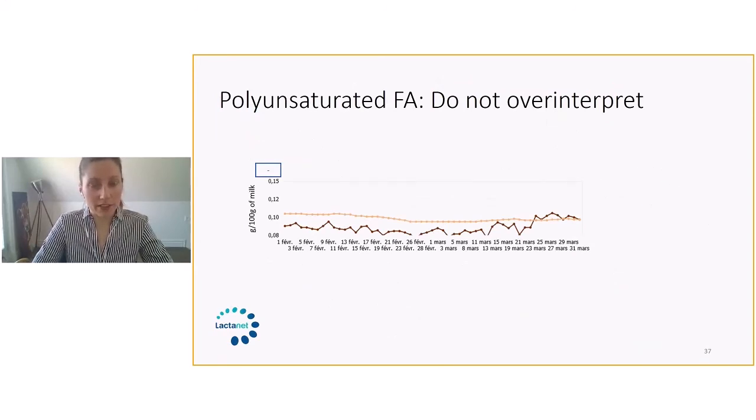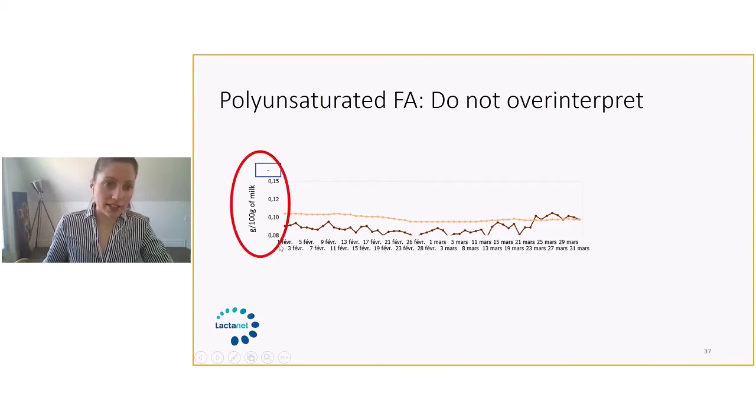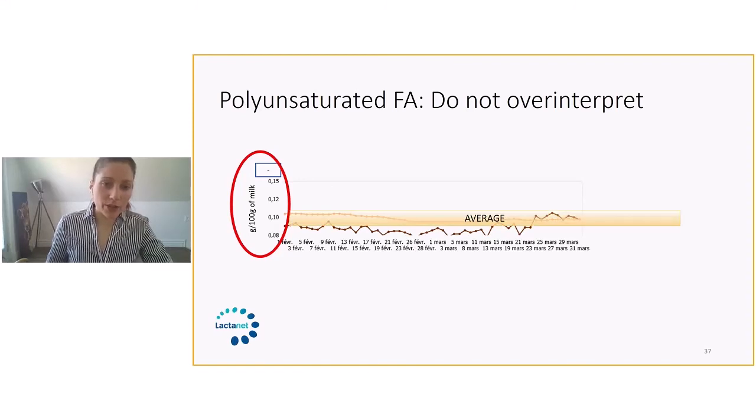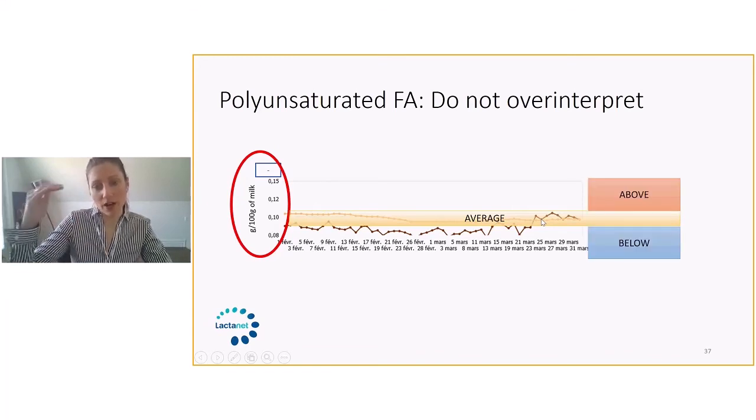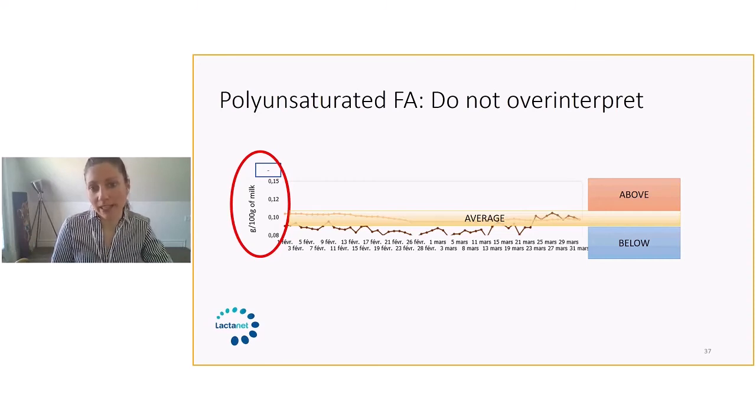One warning that we want to give is to not over interpret polyunsaturated fatty acids. If we look at the scale here, you see that the scale is really, really small. If you go from this line here to this one, it's an increase of 0.02, which means we're really looking at low levels. The way that we look at it is either we are on average, and then you have above or below average to use polyunsaturated in combination with de novo when you try to make assessments on farms.